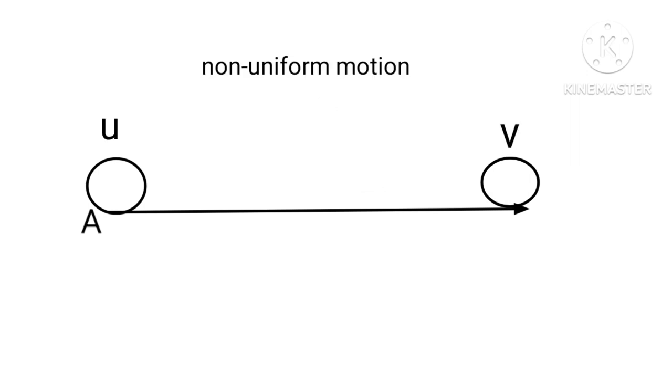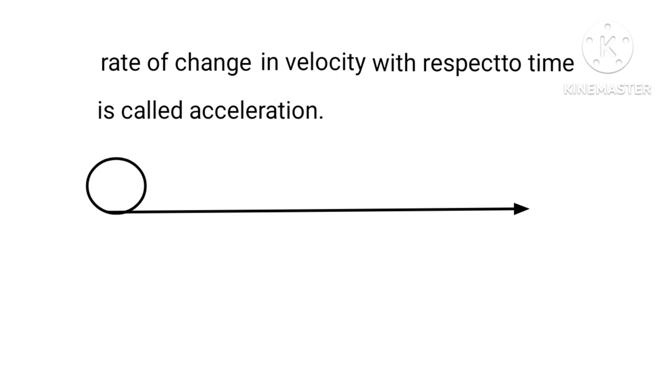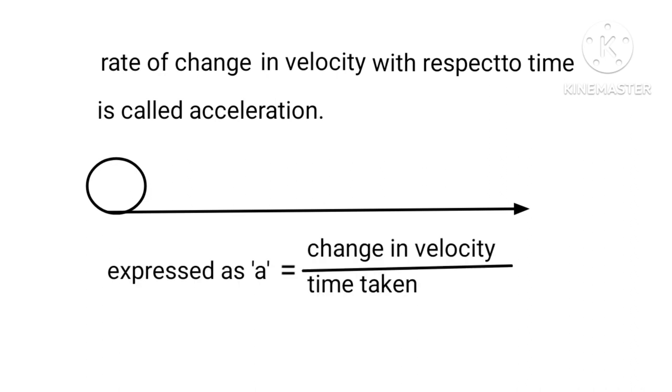However, in non-uniform motion, the change in velocity of the object during any time interval is not zero. Hence, rate of change in velocity with respect to time is called acceleration. Expressed as A equals V minus U divided by T.